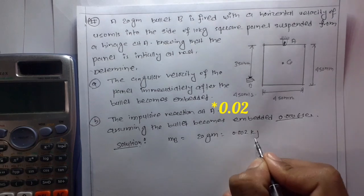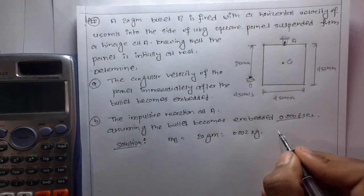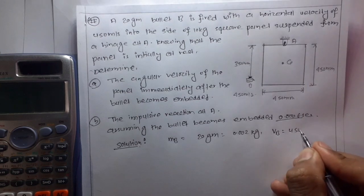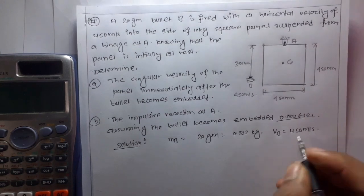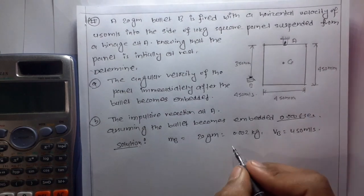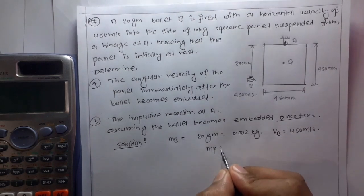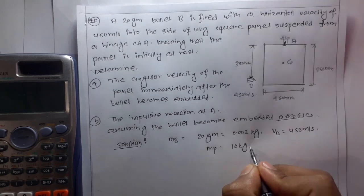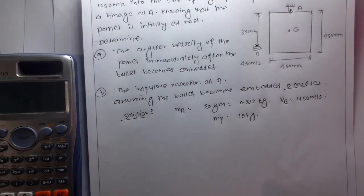The velocity of the bullet vb is 450 meters per second and the mass of the square panel is 10 kg.